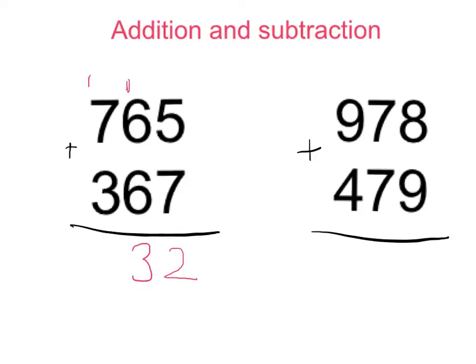Now we have 7 and 1 equals 8. 8 plus 3 which is 11. We write down 11 here and you can see our answer is 1132.